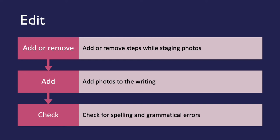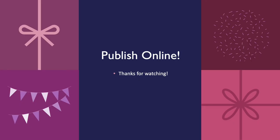The third step was to edit, which overlapped with the photos step — she had to add or remove steps from her instructions while staging photos, since she was actually doing the project in order to demonstrate things visually. Then she had to add the photos to the writing in the correct spots, and do the normal checking for spelling and grammatical errors.